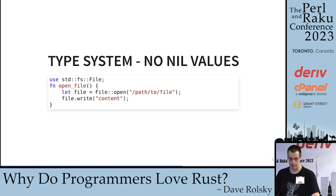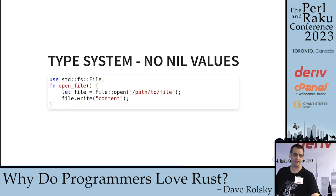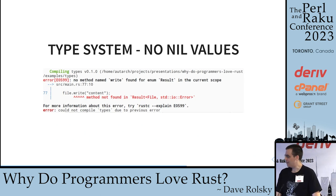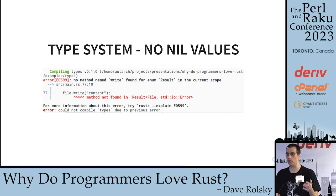We can use our pattern matching — we match and either we got something (in this case an integer) or we got nothing, and we have to handle both cases. We have to explicitly check for None. We can't just treat the return value as an integer because it's not an integer; it's an Option that could contain an integer. We have something very similar for fallible operations — things that may return errors. We're trying to open a file and then write to it.